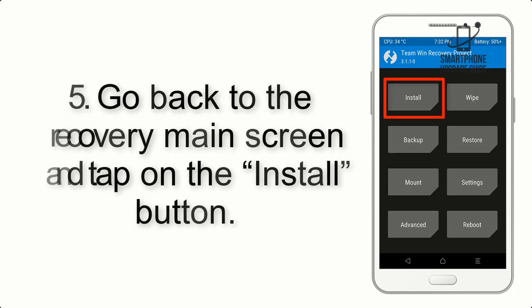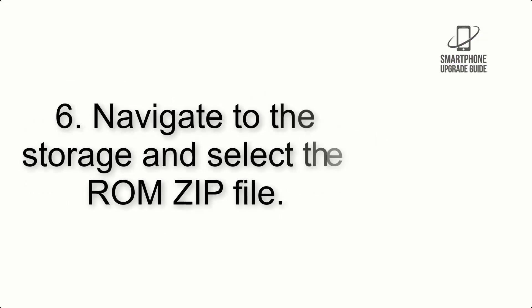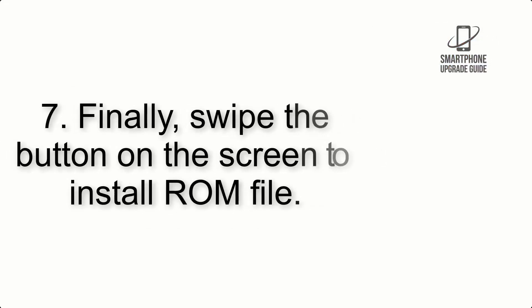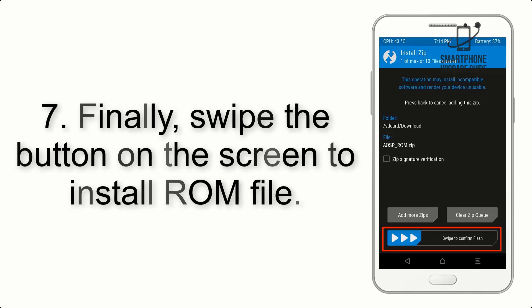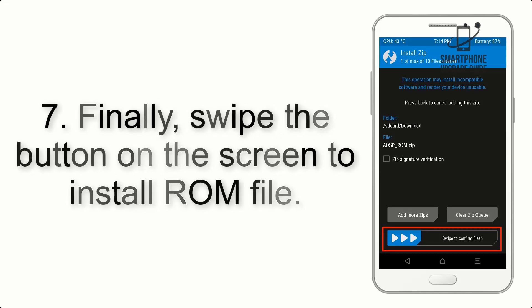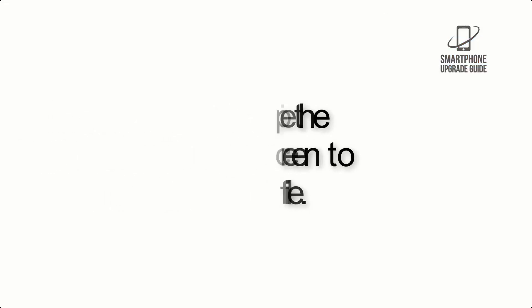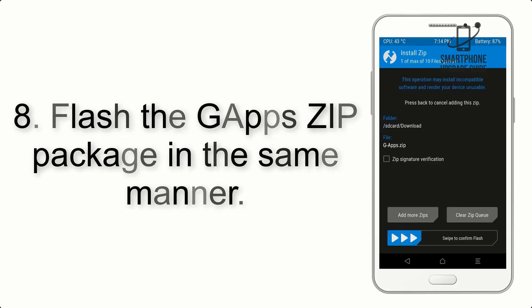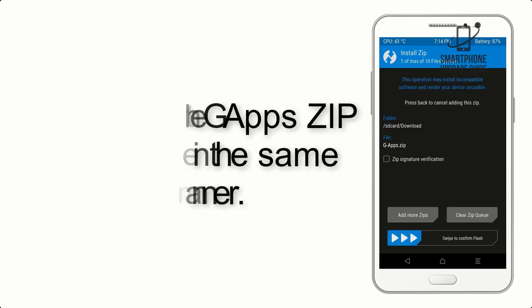Step 5: Go back to the recovery main screen and tap on the Install button. Step 6: Navigate to the storage and select the ROM zip file. Step 7: Swipe the button on the screen to install the ROM file.